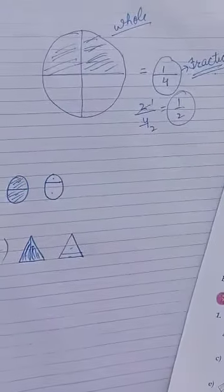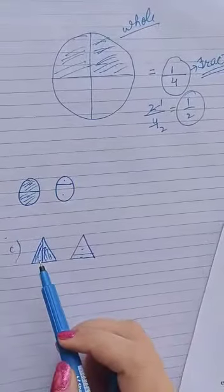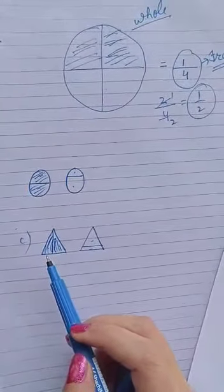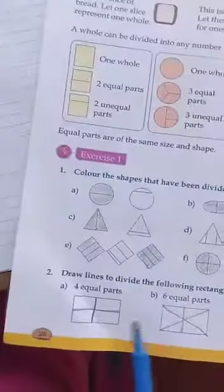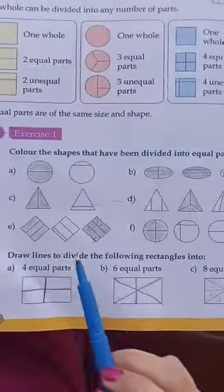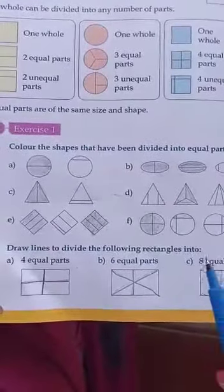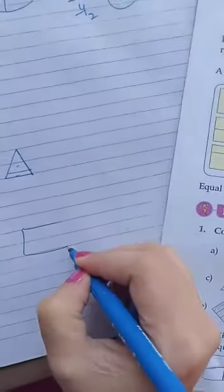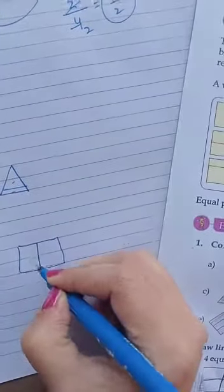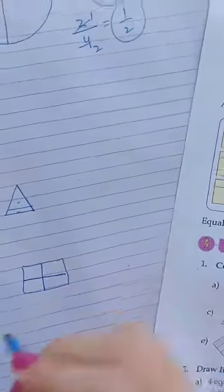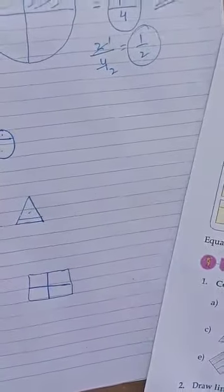Next, second question: draw lines to divide the following rectangle into four parts. See, a rectangle is given. You have to convert it into four parts. How will you do it? You will draw two lines like this. Similarly, you will do the other parts also.